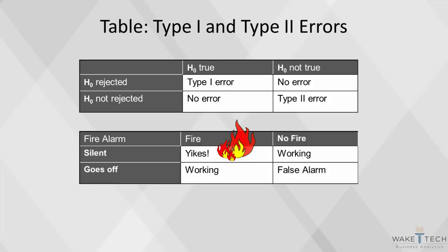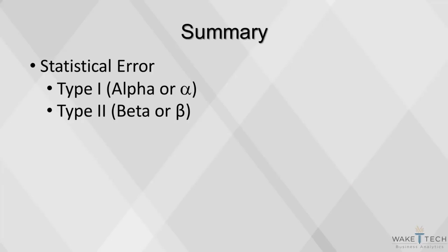The opposite case may also happen. If the alarm goes off and there's actually a fire, there's no error. But if there's no fire and the alarm goes off, it's a false alarm. That's the type 2 error. Here it is a less serious problem. This concludes our video on statistical error. Today we discussed type 1 or alpha error and type 2 or beta error.